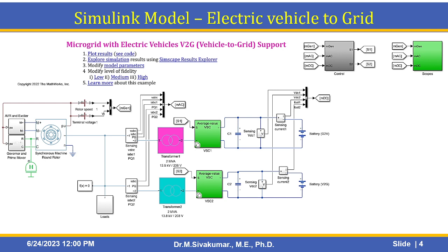This is a Simulink model for this electric vehicle to grid — modeling of a microgrid with electric vehicles using vehicle to grid technology. Here you can see there are two types of transformers: 2 MVA, 13.8 kV and 208 V. There is also a VSC — a voltage source converter — with average values of VSC1 and VSC2.